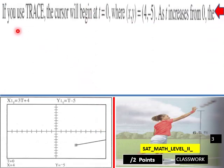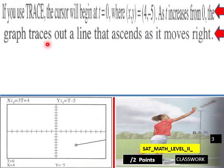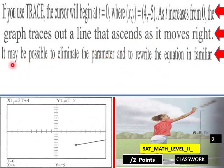If you use trace, the cursor will begin at T equals 0, which is here where XY equals (4, -5). As T increases from 0, the graph traces out a line that ascends as it moves right.